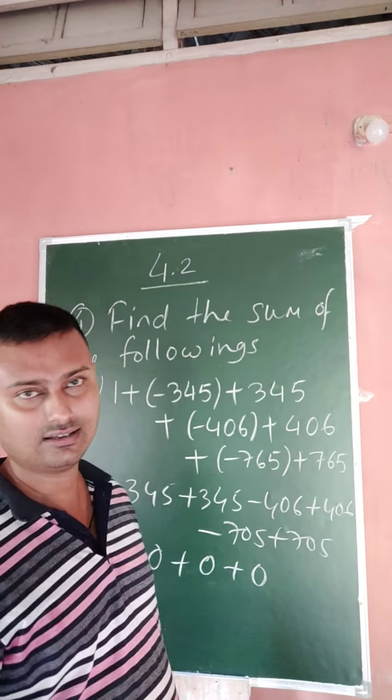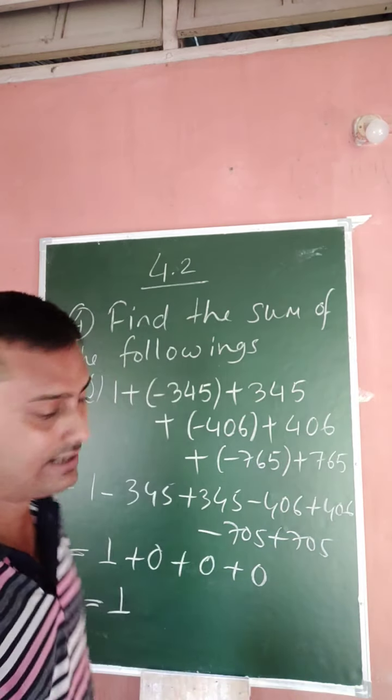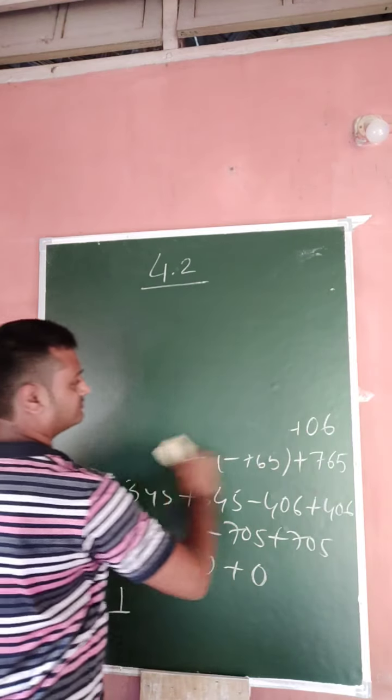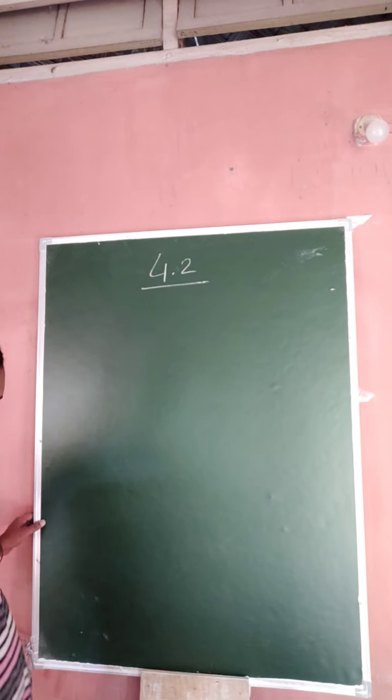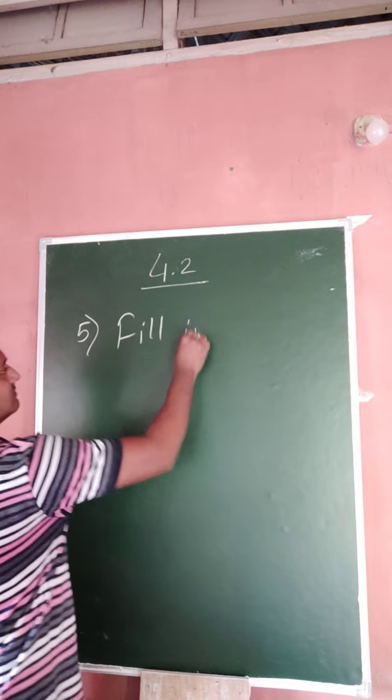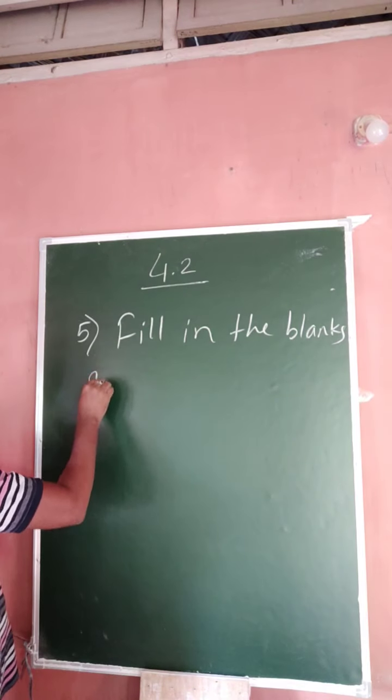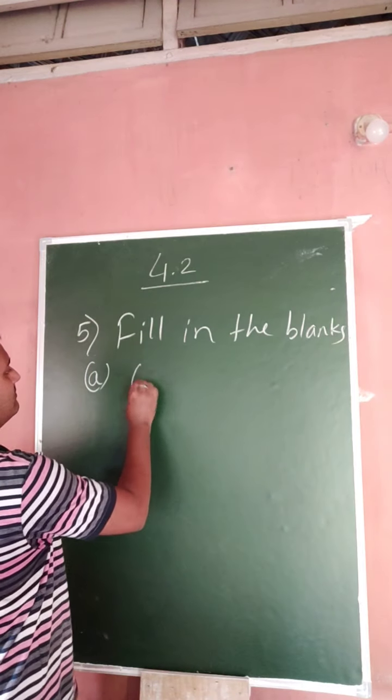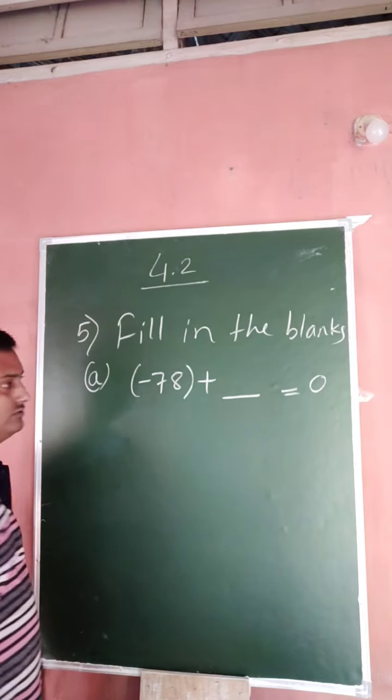So now come to the equation 5: fill in the blanks. Minus 78 plus minus 78 plus one number is equal to 0.